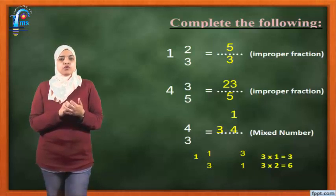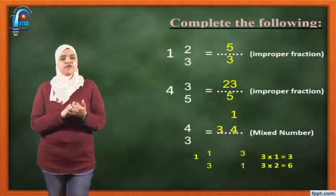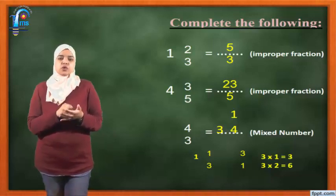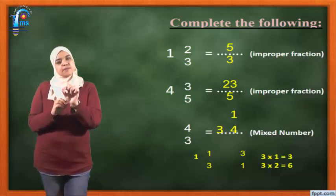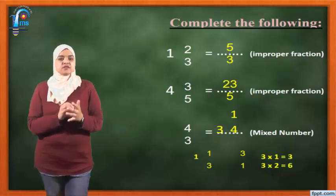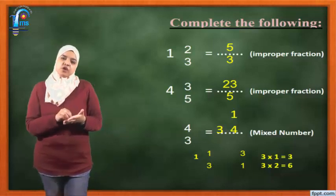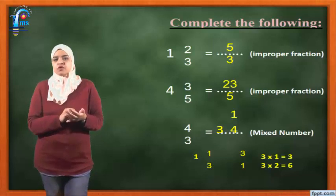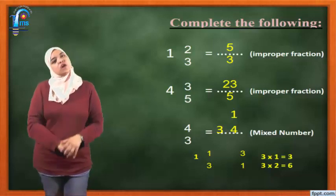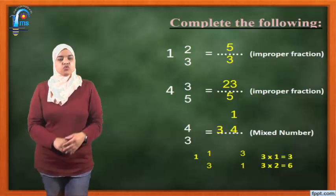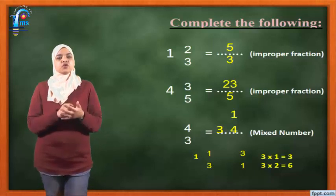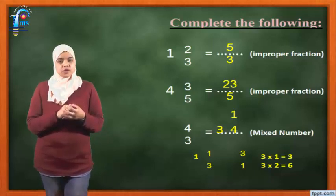Another one: 4 and 3 over 5 equals what? I want to write it as an improper fraction. I will put the denominator as it is — write 5 in the denominator. So to get the numerator: 4 times 5 equals 20. 20 plus 3 equals 23. So the numerator here will be 23.